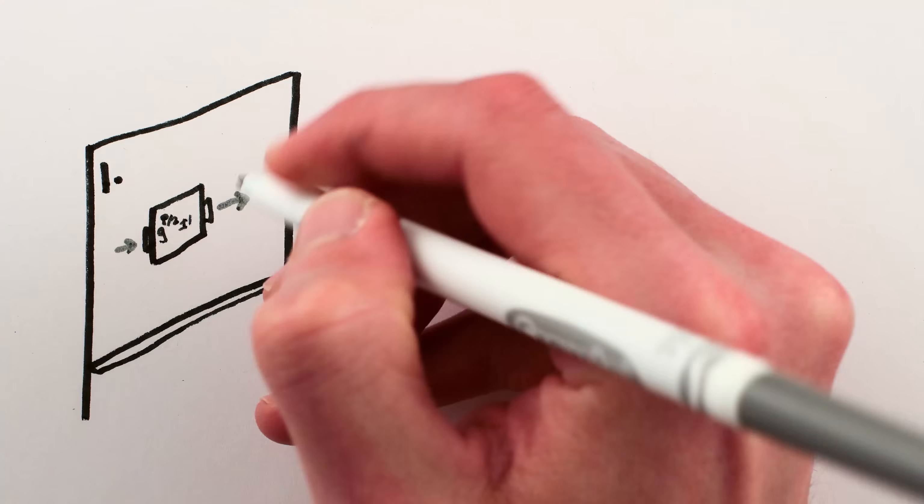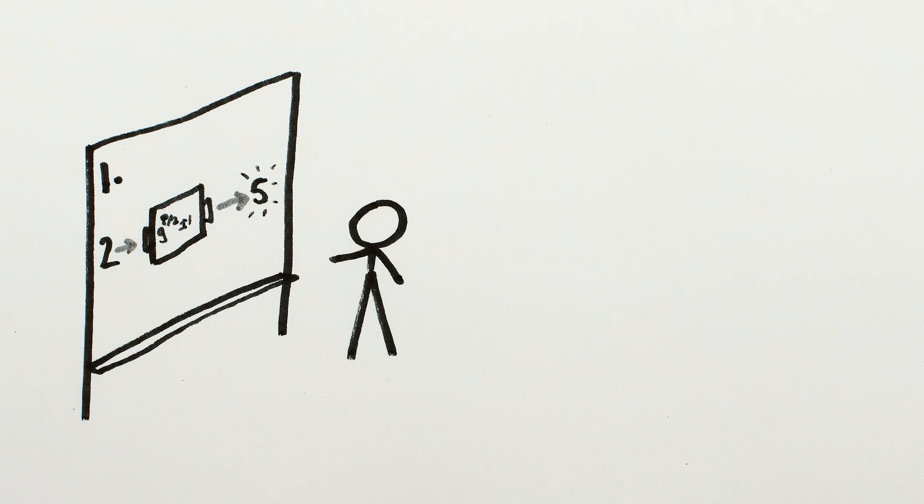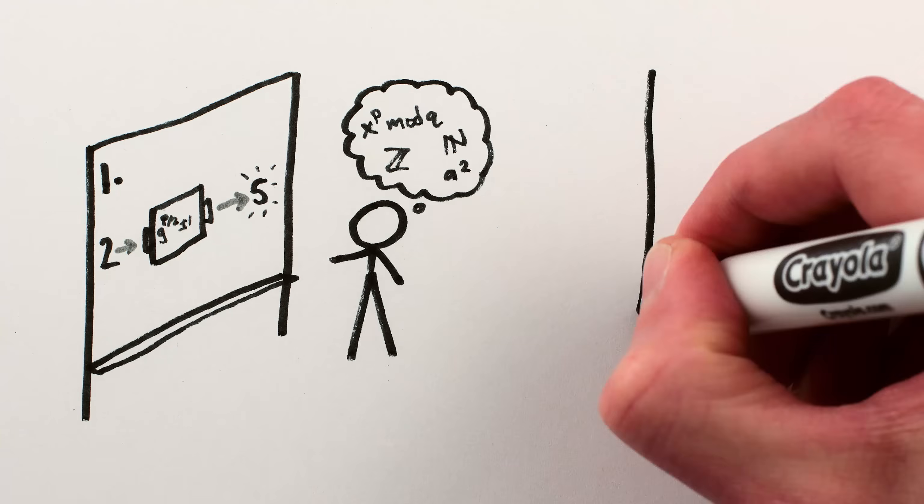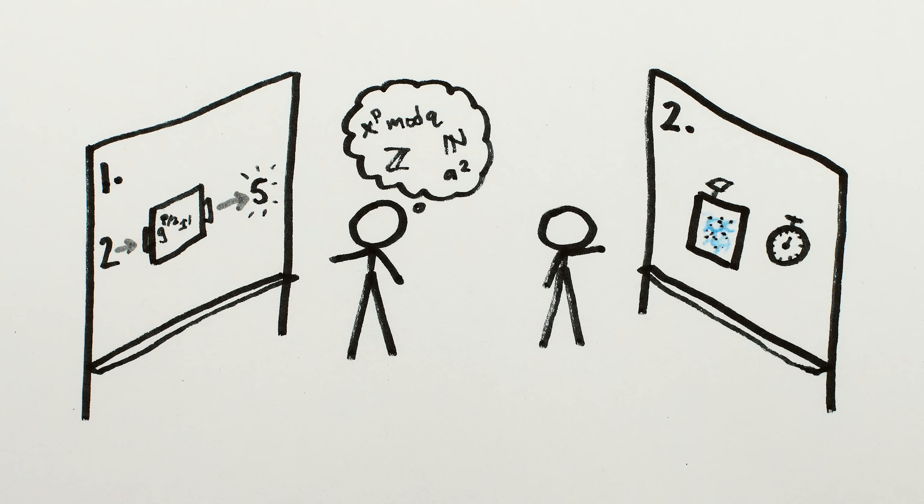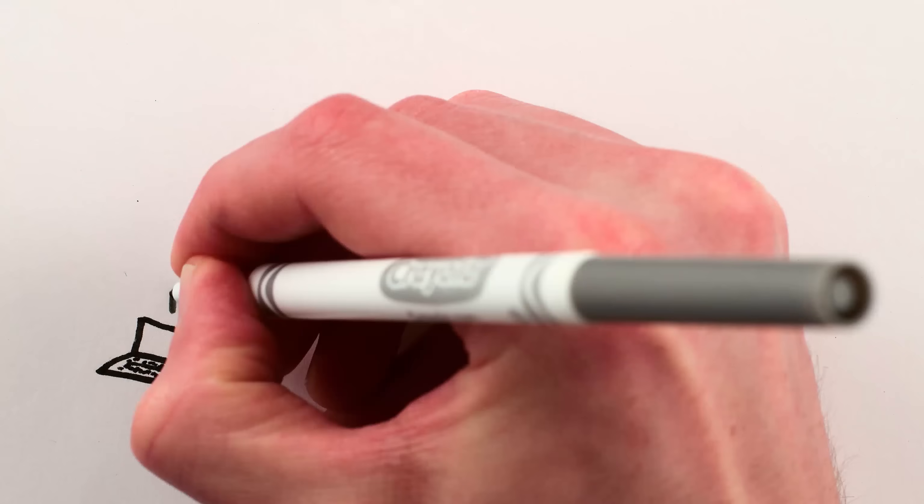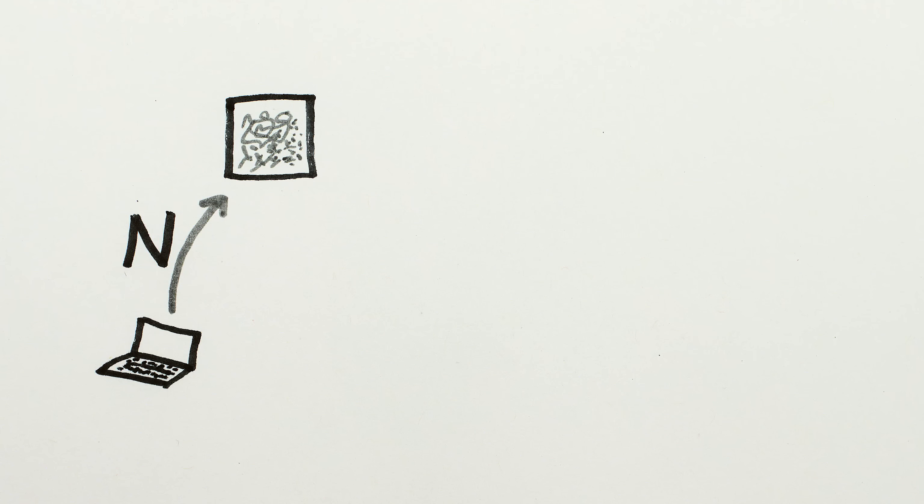So our task is to explain how Shor's algorithm turns a crappy guess into a better guess, which is purely mathematics, and why quantum computers make that fast, which is where the physics comes in. It all starts with a big number, n, that you'll need to find the factors of to break into some encrypted data.